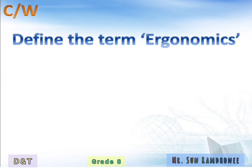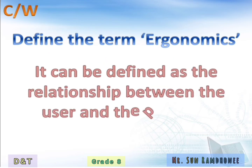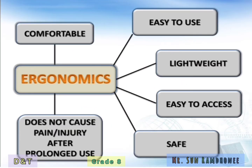How are we going to define the term ergonomics? In simple terms, ergonomics can be defined as the relationship between the user and the product. We can also say that ergonomics is the emotion that a person feels when using a particular product. When we talk about an ergonomic product, we can say that the product is either comfortable, easy to use, lightweight, easy to access, safe, or does not cause pain or injury with prolonged use.